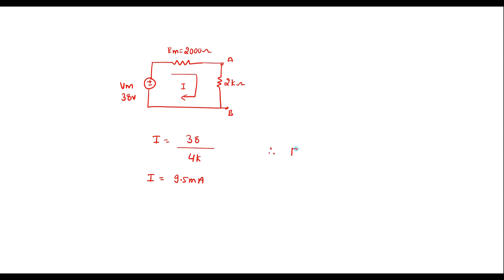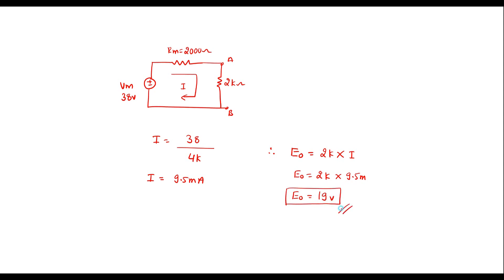Therefore, voltage E0 is the voltage across the 2 kilo ohm resistor: E0 = 2k × 9.5 mA. The milli and kilo cancel, giving E0 = 19 volts. This is the required result calculated using Millman's theorem. Thank you for watching.